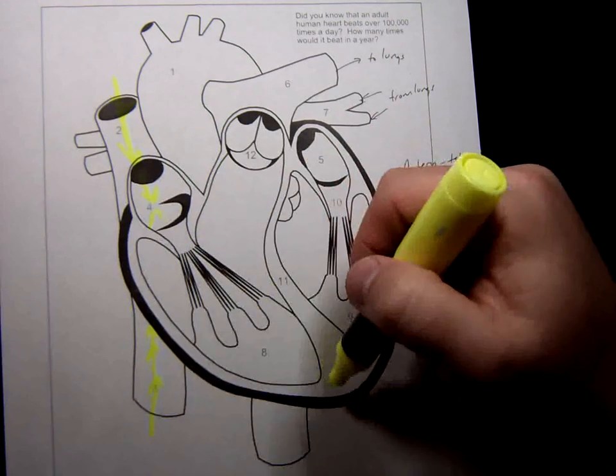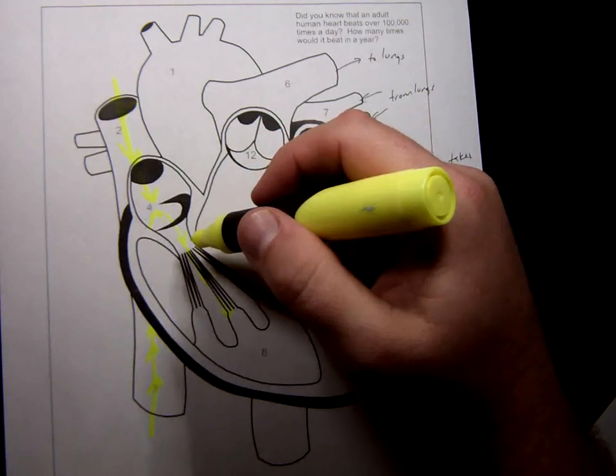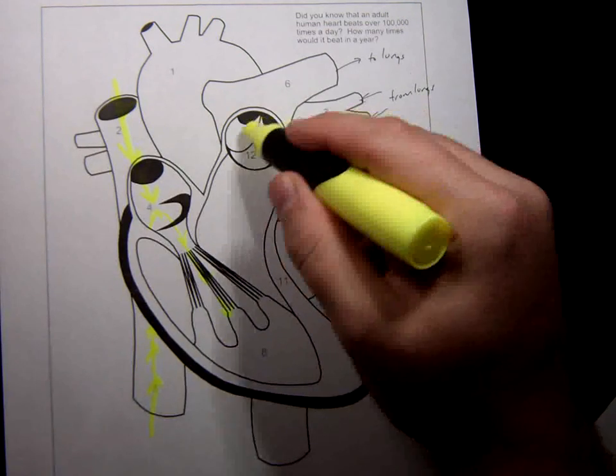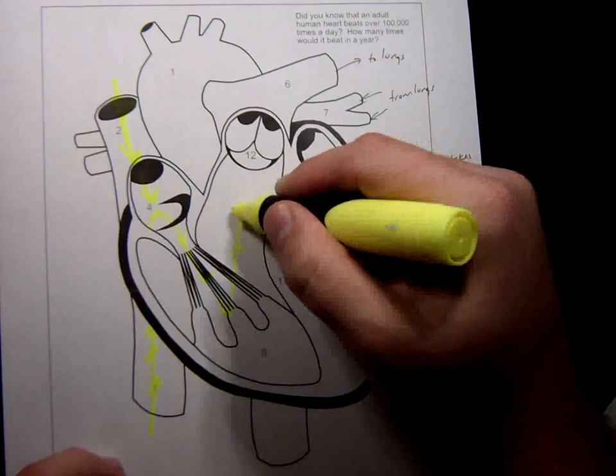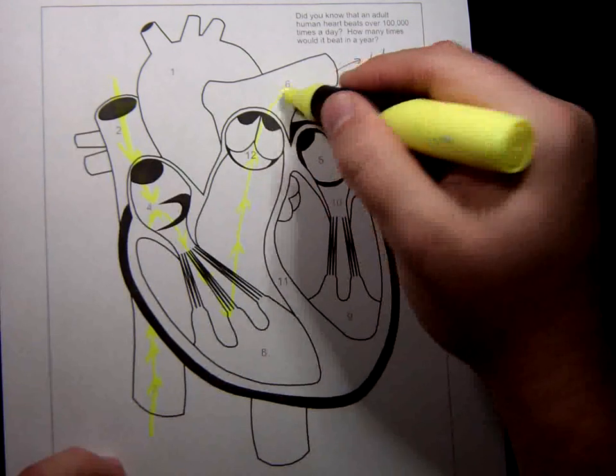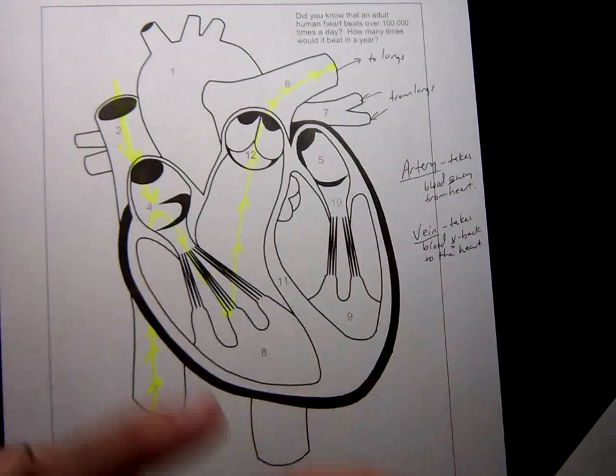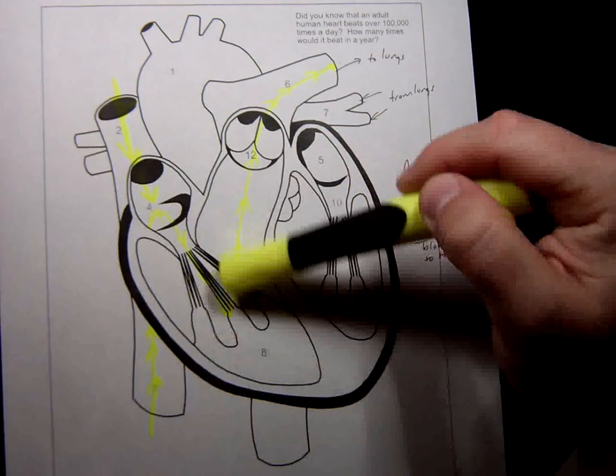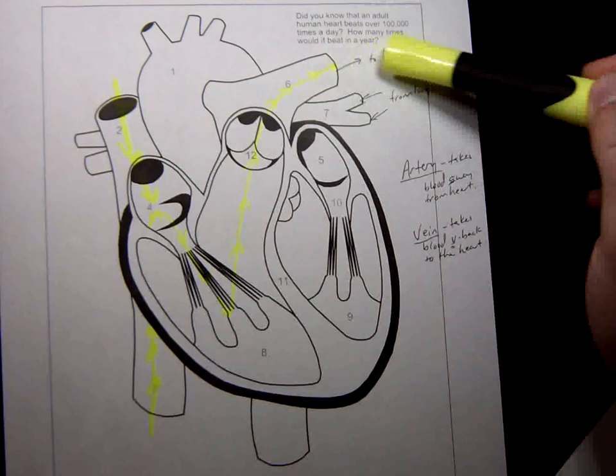Now, this muscle's going to squeeze, and when it squeezes, this valve is going to slap shut, which means the only way out now is through this valve. What's the name of this valve again? Pulmonary semilunar valve. That's correct. And the reason it's the pulmonary semilunar valve, it's the valve that leads to the lungs. So it travels through this valve and then through this vessel on its way out to the lungs. This vessel is known as the pulmonary artery.